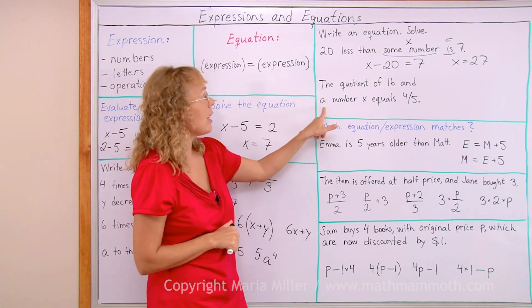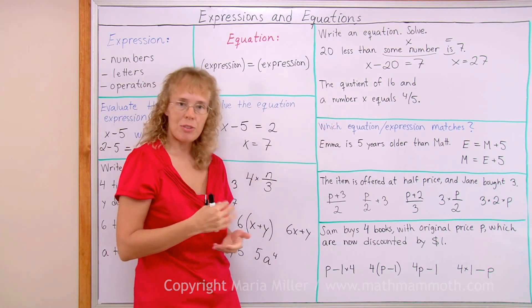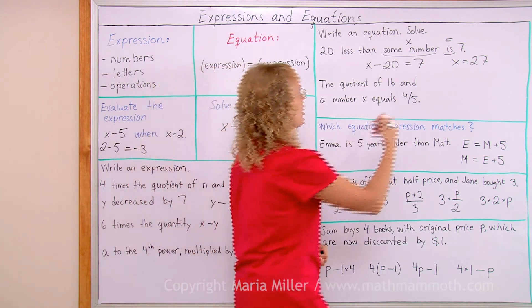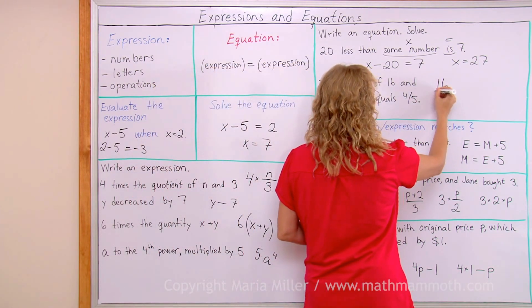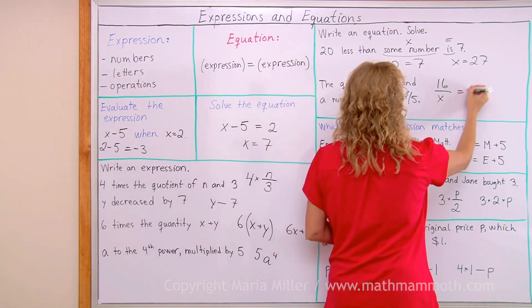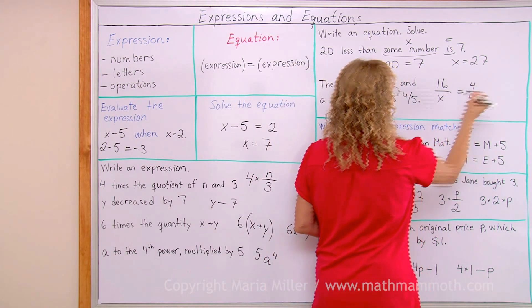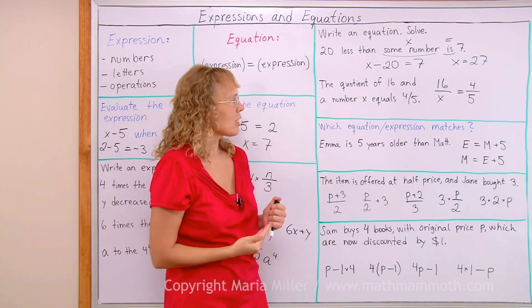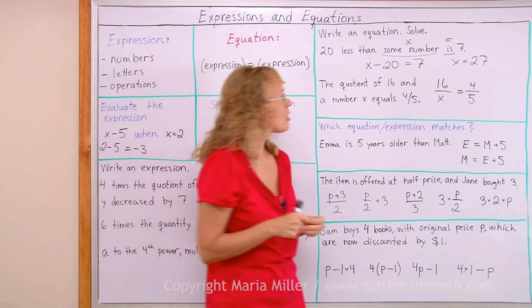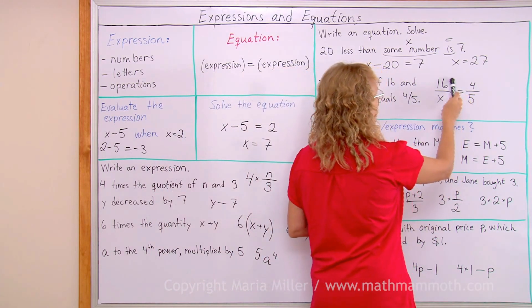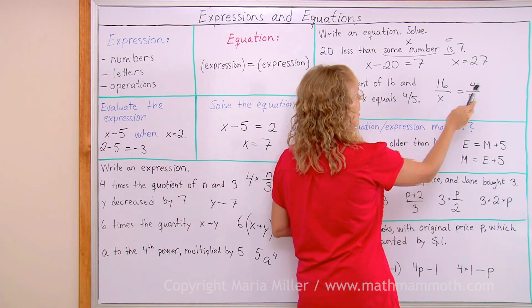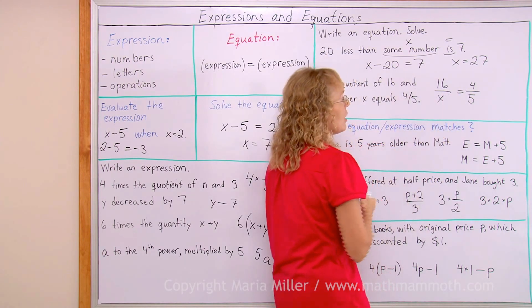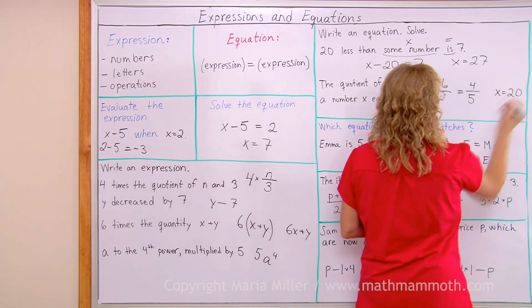The quotient of 16 and the number x equals four fifths. The quotient again means the division of 16 and this number x here and this equals four fifths. Okay, I'm not going to go into how usually these kind of equations are solved. You can think of equivalent fractions. Four fifths is equal to what fraction? 16 over what? Thus 4 times 4 would be 16 so 5 times 4. x equals 20 is the solution here.